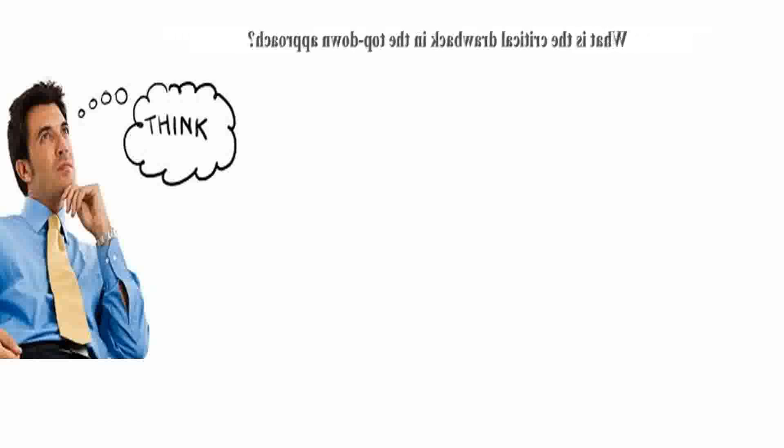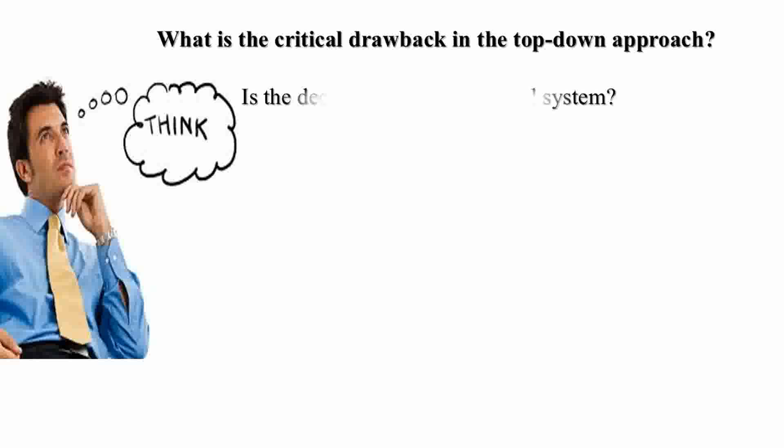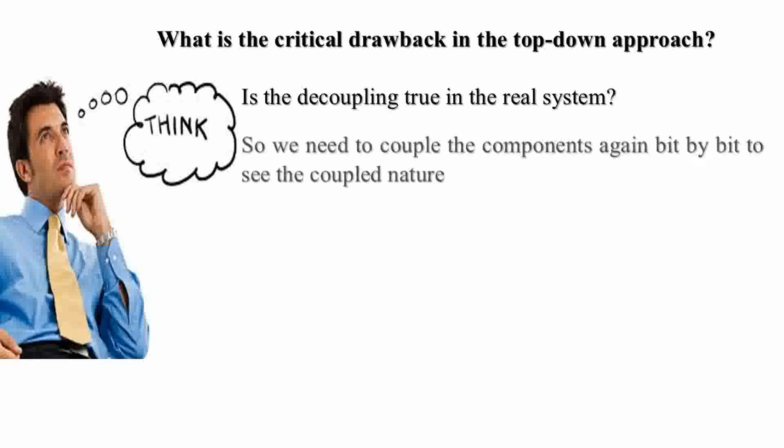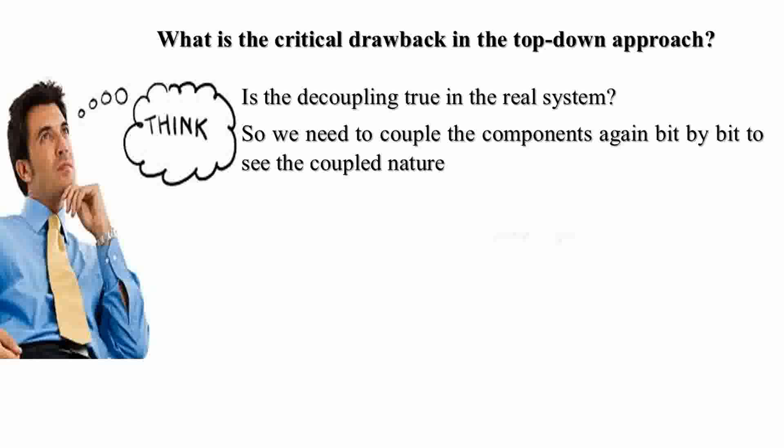We have decoupled a component from the coupled Earth system. It is simpler, but a crucial drawback of decoupling is that the real system is not decoupled but very interactive. So we have to couple again as we have understood and corrected the process in a piecewise fashion. The coupling of all bits is called a bottom-up approach. This brings us a better understanding of global climate change through better understanding of the modeling tools.